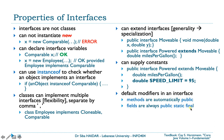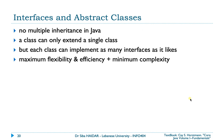Regarding interfaces and abstract classes: you cannot have multiple inheritance in Java — a class can only extend a single class. However, each class can implement as many interfaces as it likes. This provides maximum flexibility and efficiency with minimum complexity, avoiding problems encountered in languages like C++ with multiple inheritance.